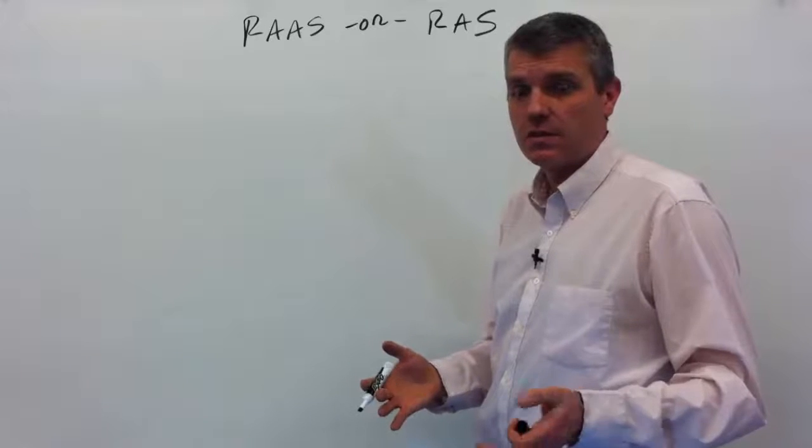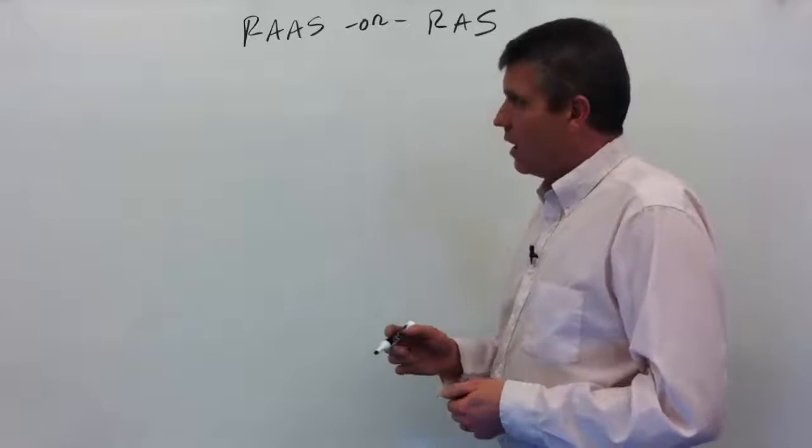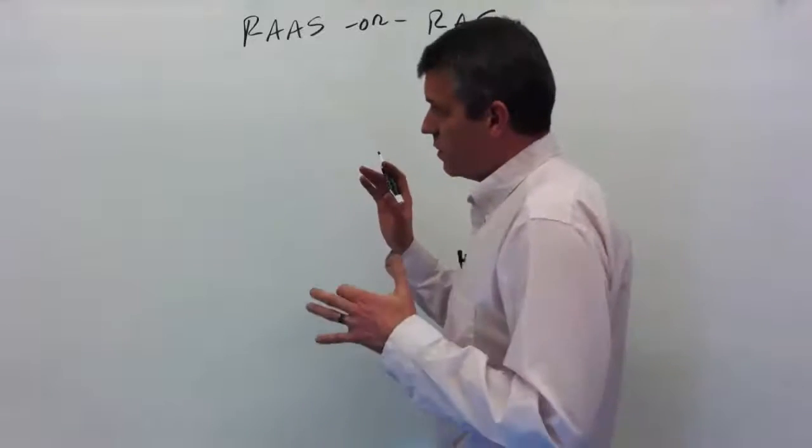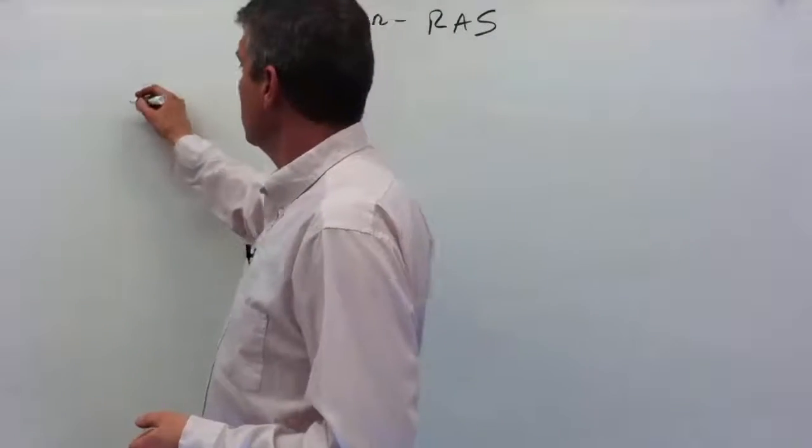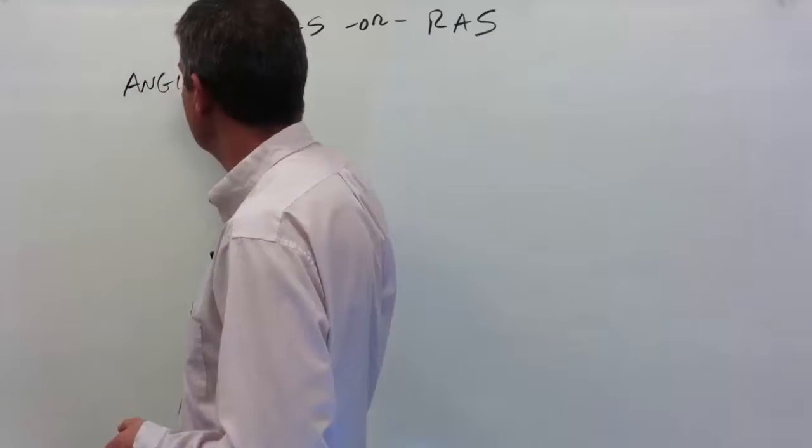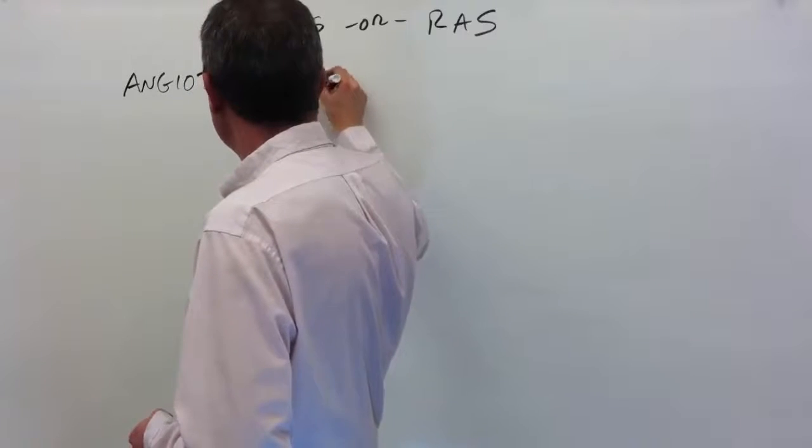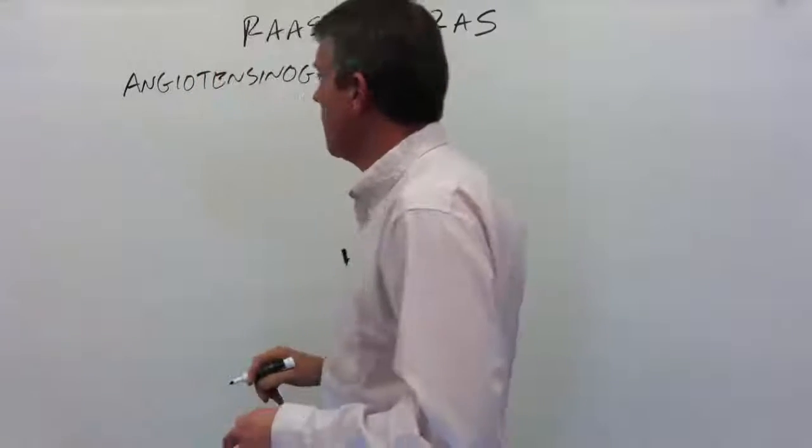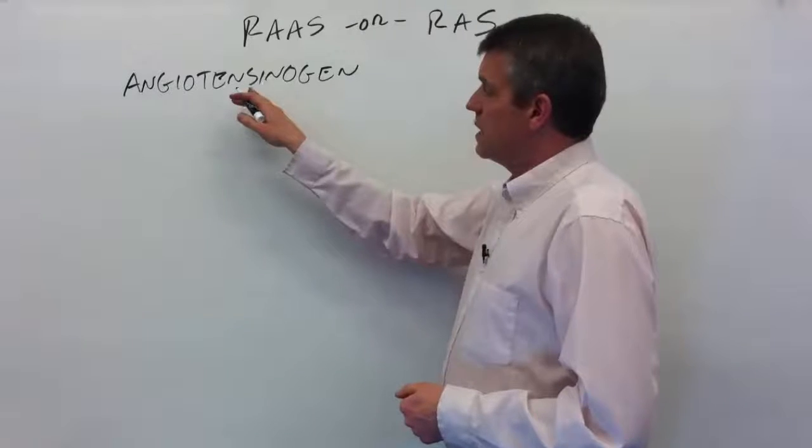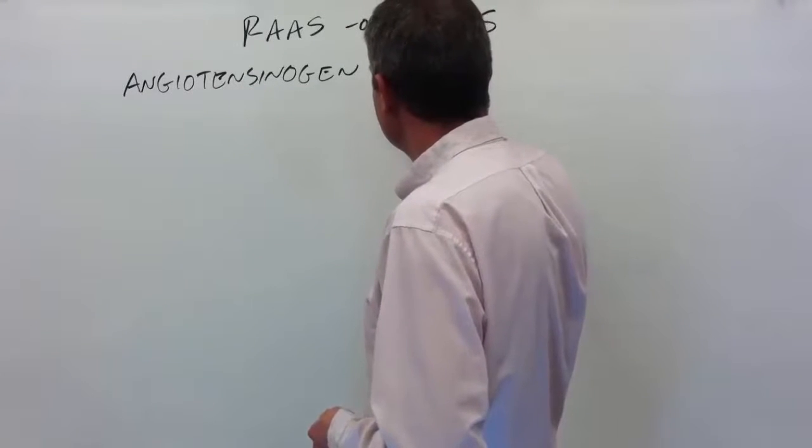It starts out with a chemical called angiotensinogen. Angiotensinogen is made by the liver. So I'll try and draw a little picture of the liver. There's the gallbladder down there.